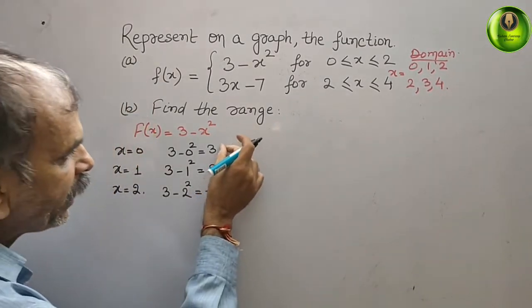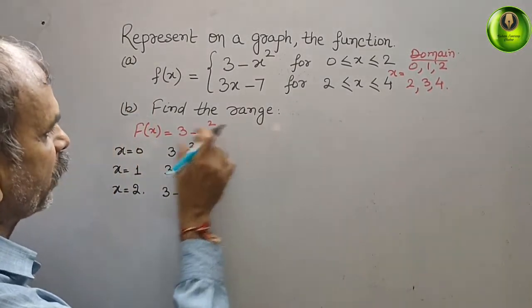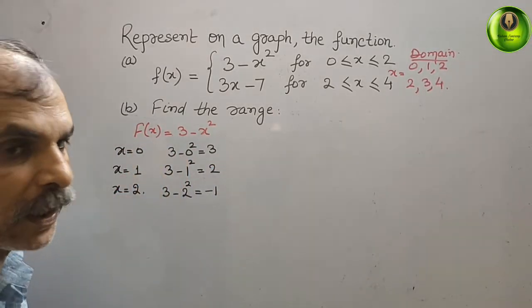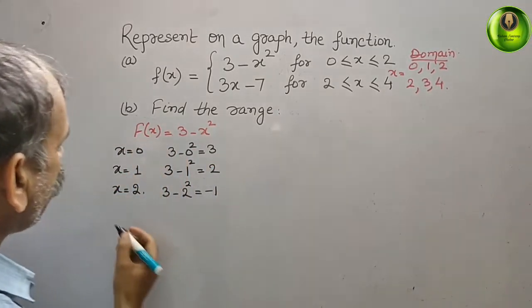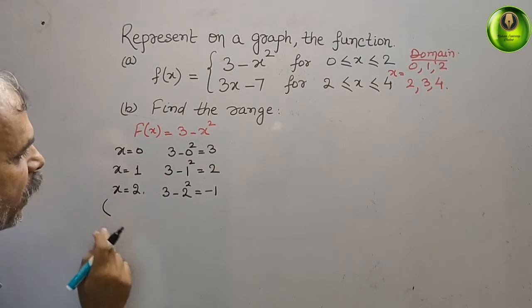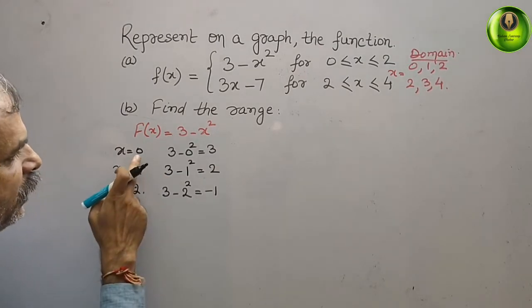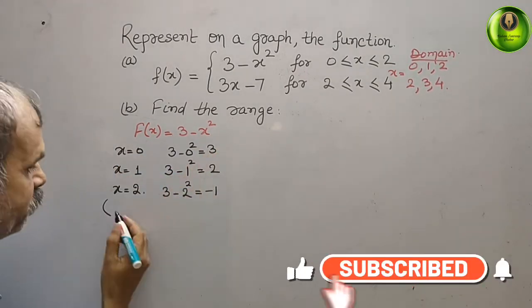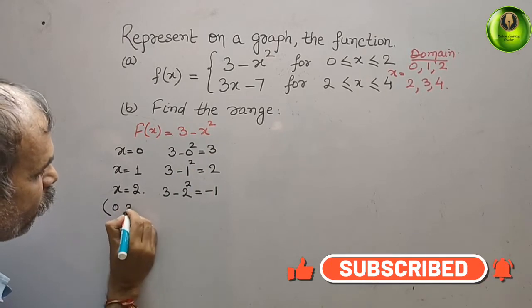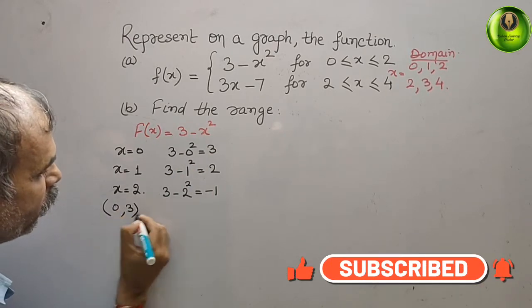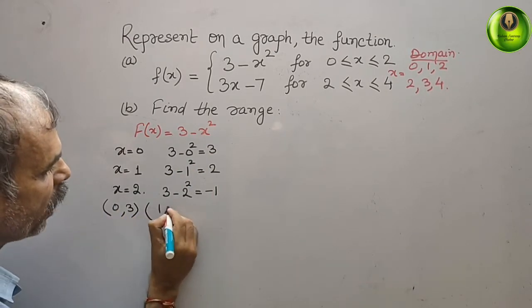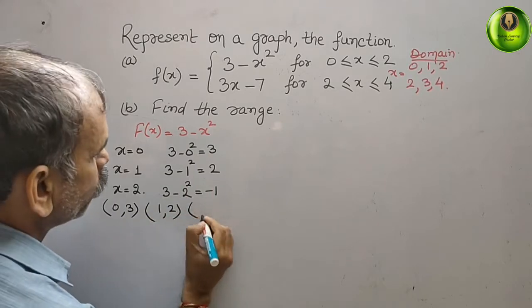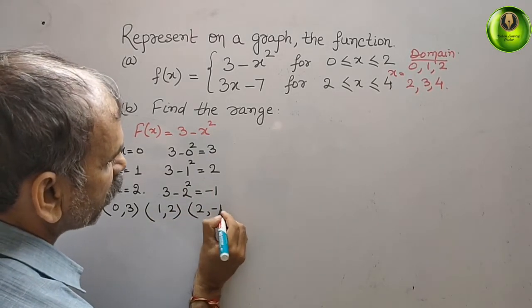Now the coordinates from the first function are: (0, 3), next (1, 2), and next (2, −1).